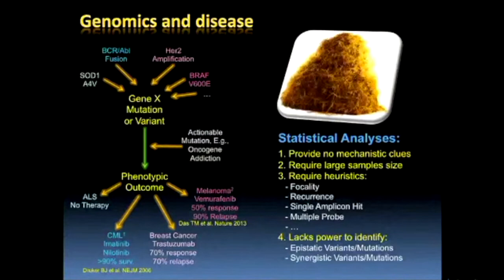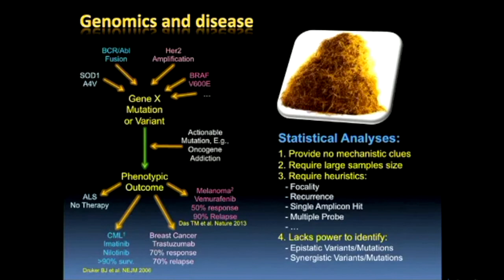Let me start by highlighting the conventional but most accepted paradigm for discovery in biology and medicine — trying to figure out what genetic variants, germline or somatic mutations in cancer, are associated with a specific phenotypic outcome. The vast majority of research today, and the entire paradigm of precision medicine, is predicated on that arrow going from the mutation to the phenotypic outcome.